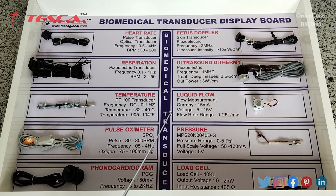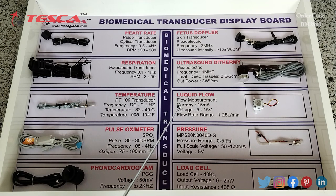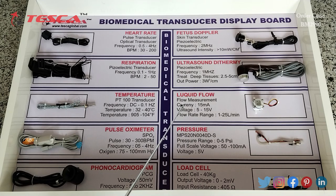Then this is the liquid flow measurement transducer. Its current range is 15 milliampere, voltage range is 5 to 15 volts, and its flow rate range is 1 to 25 liters per minute.